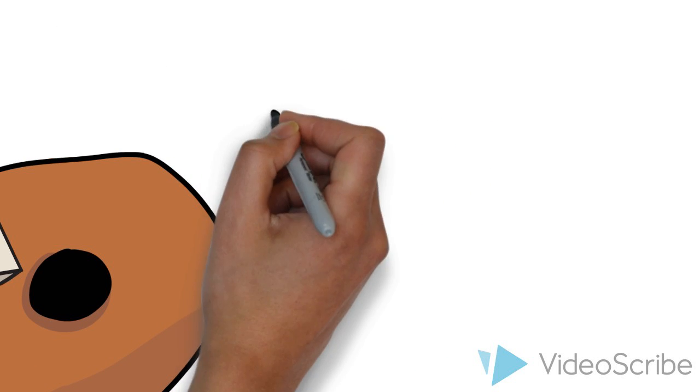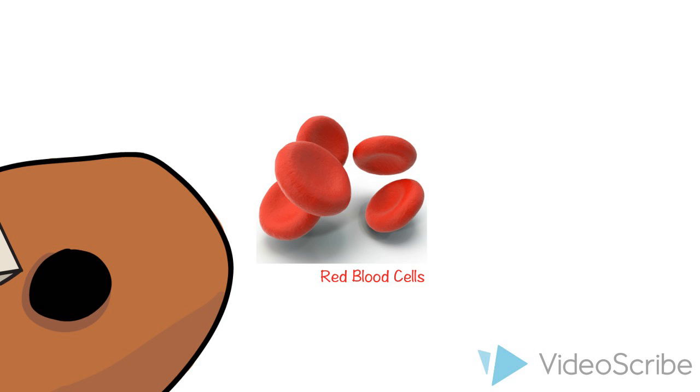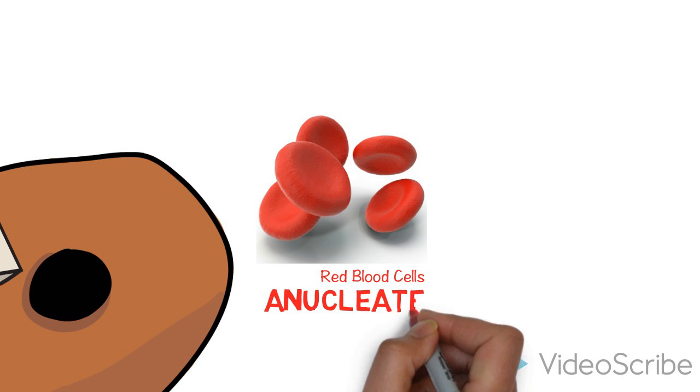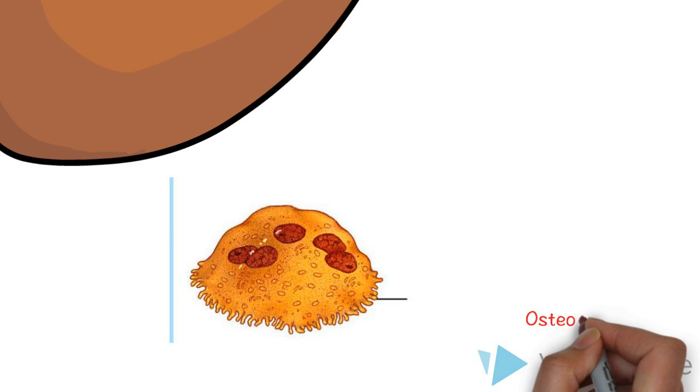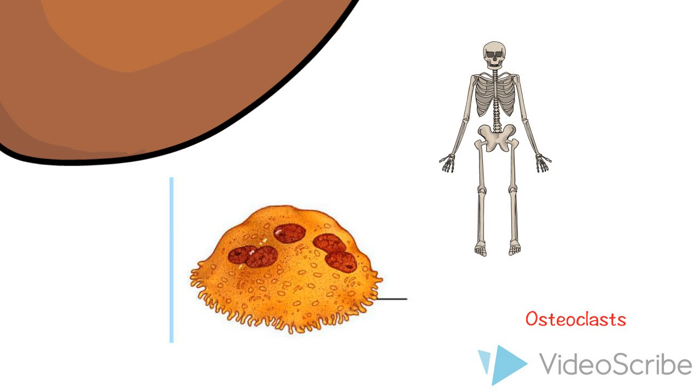There are a few exceptions, however. Red blood cells, for example, have no nucleus and so are known as anucleate. At the other end of the spectrum, cells known as osteoclasts, which are involved in the remodeling of bone tissue, can have many nuclei and so are known as multinucleate.